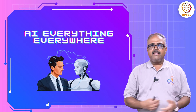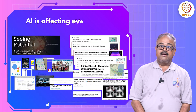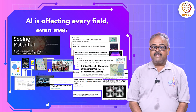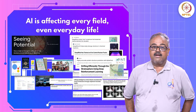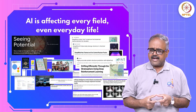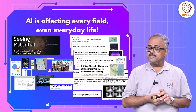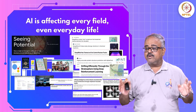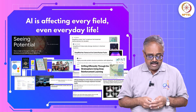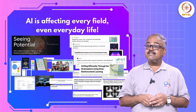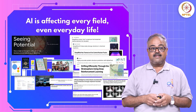AI is in everything, everywhere. It's affecting all fields and even everyday life now. When AI is interacting with well-defined systems such as nuclear fusion, we know how we should control the AI. But when it starts interacting with human beings, that is when the challenges start.